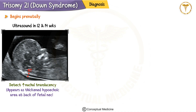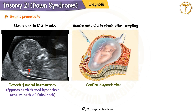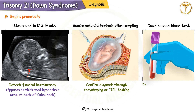Diagnosing Down syndrome often begins prenatally. Between 12 and 14 weeks, an ultrasound can detect increased nuchal translucency, which appears as a thickened hypoechoic area at the back of the fetal neck. Amniocentesis or chorionic villus sampling can confirm the diagnosis through karyotyping or FISH testing.